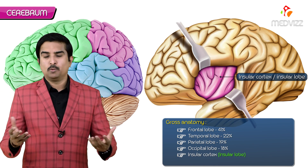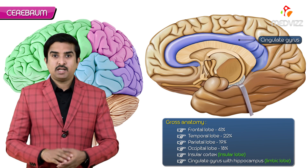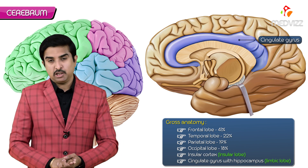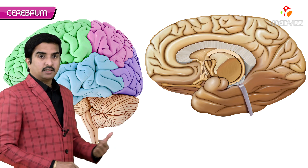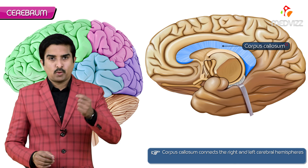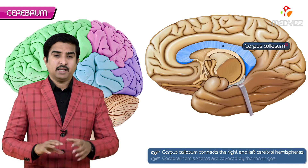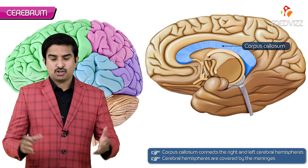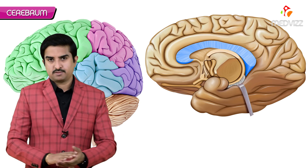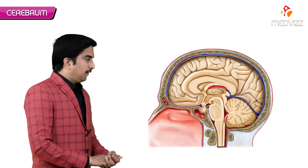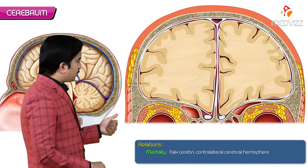In addition to these four lobes, some authors also refer to an insular cortex as the insular lobe, as well as the cingulate gyrus with hippocampus as the limbic lobe. The corpus callosum connects the right and left cerebral hemispheres, and they are covered by the meninges.